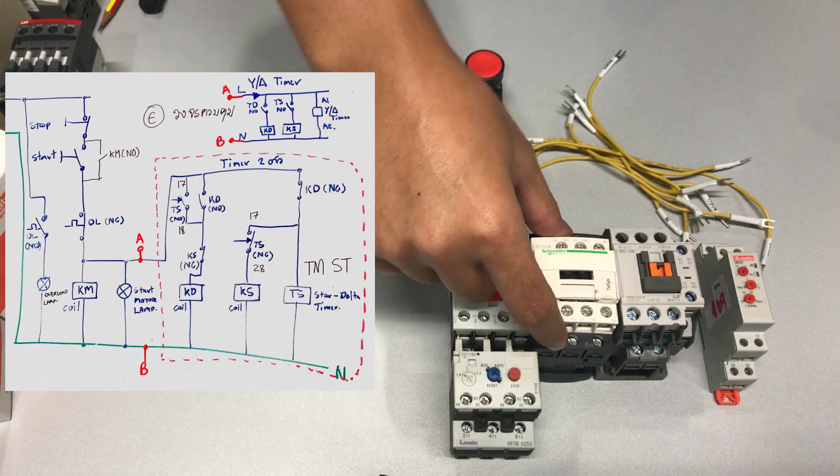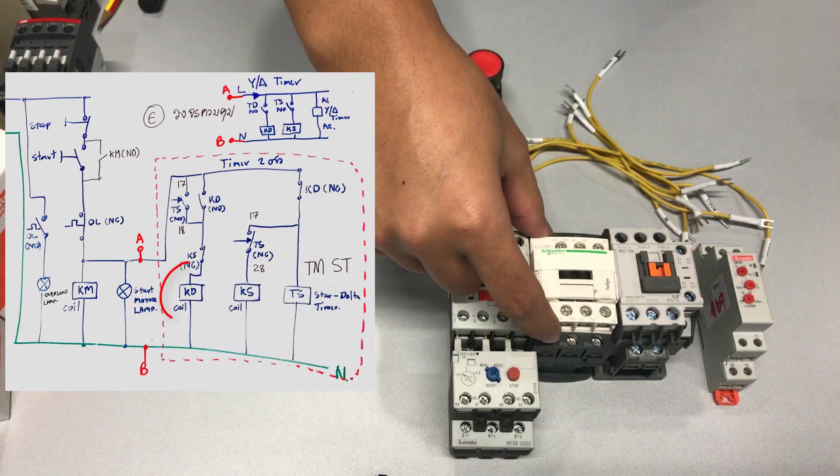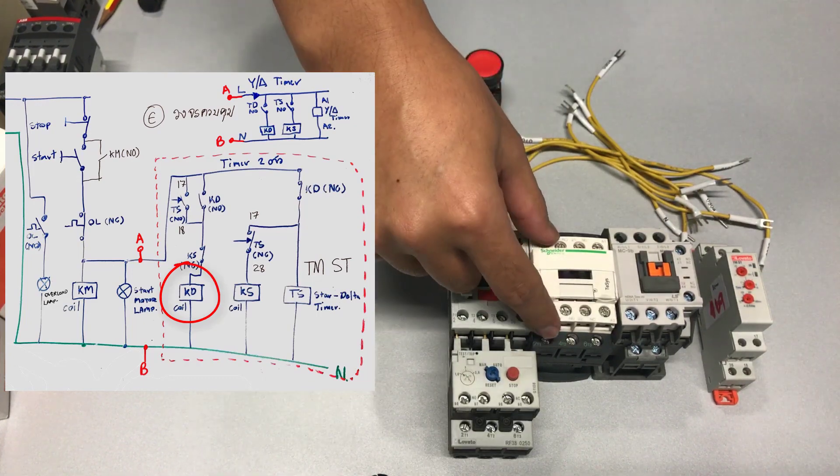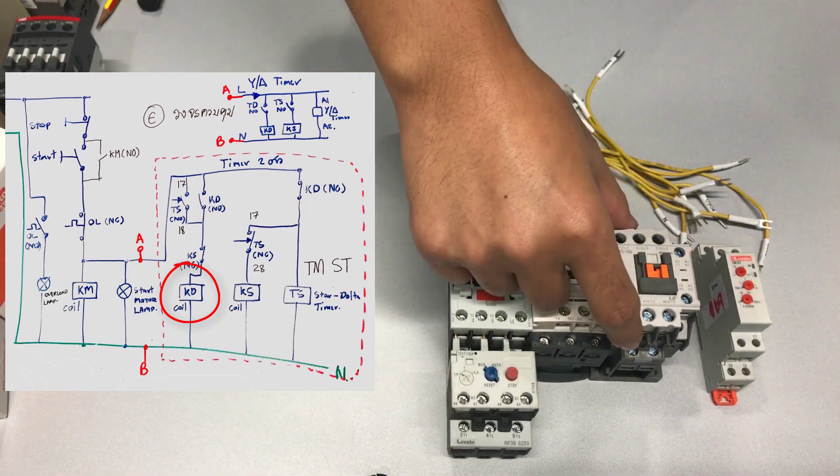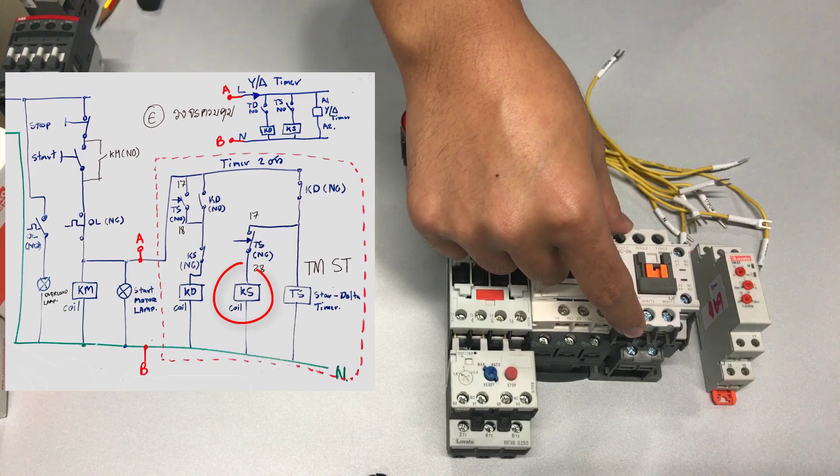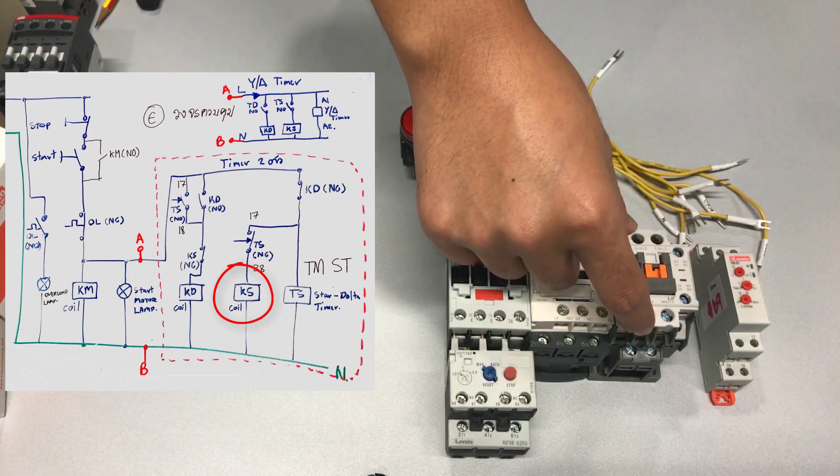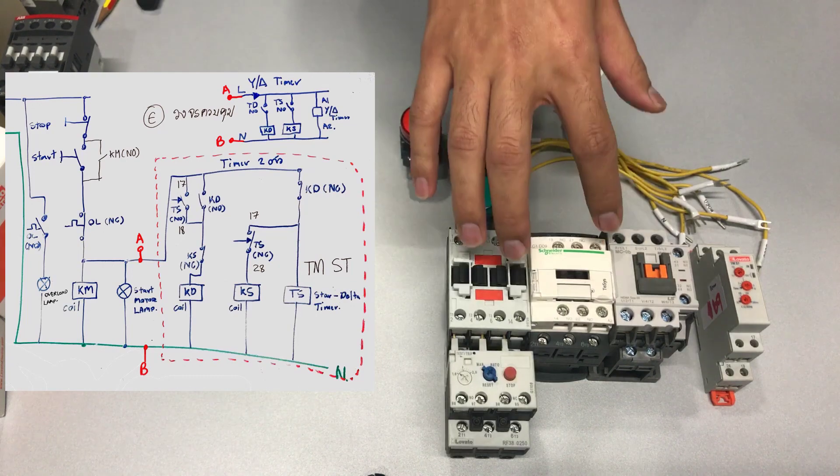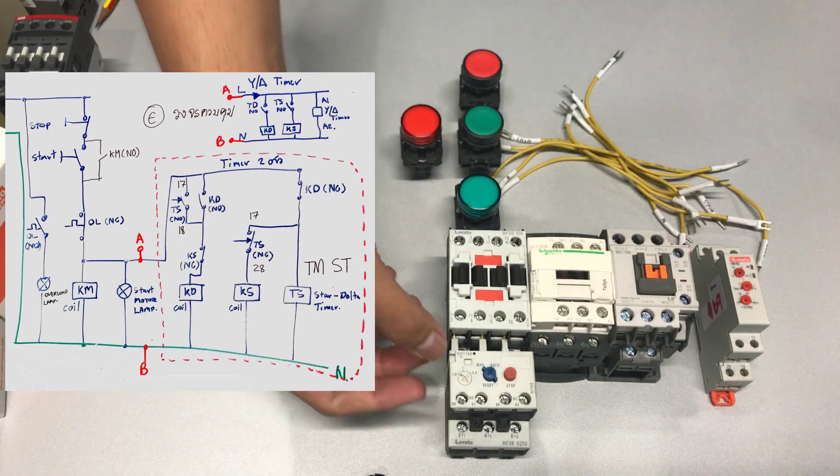The second one is the delta contactor labeled KD. This one you will need the auxiliary contact to have both NO and NC. The third is the star contactor labeled KS. This will also need the auxiliary contact to have both NO and NC. The three of them can be of the same size.